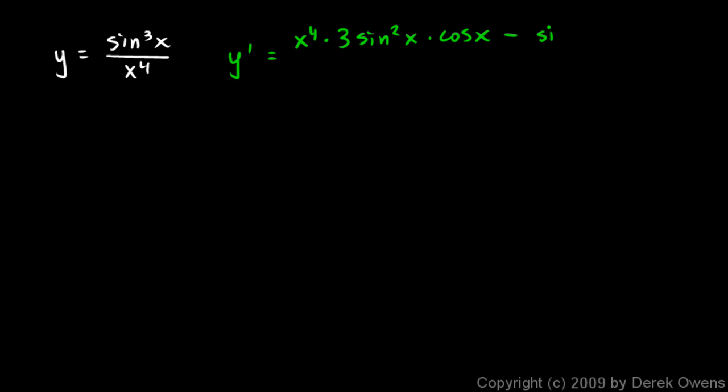Then we do minus high, which is sine cubed x, times d low, which will be 4x cubed. And all of that is over the denominator squared. So all of that is over x to the power of 8. And let's simplify this a little bit. This is worth simplifying because we've got an x to the fourth here, and an x cubed there, and an x to the eighth there. So we can factor out an x cubed and cancel it out.